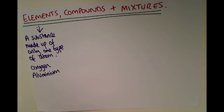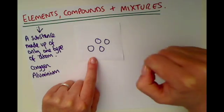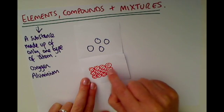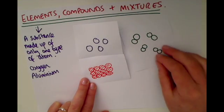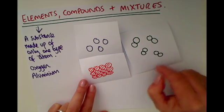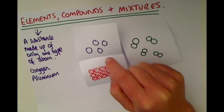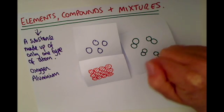If we were to draw the elements, we would draw things that only have the same shaped particle in them. For example, this would be an element because it only has the same type of purple circle. Similarly, this would be an element because it is only made up of one type of atom. As long as they are only made up of one type of atom — only one type of shape in these diagrams — they are an element.